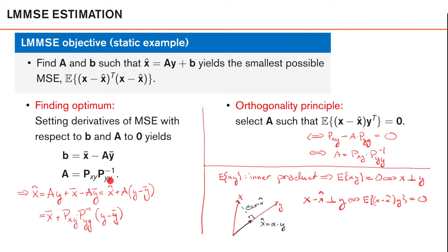We have made no assumptions regarding the properties of X and Y — in terms of their distribution or how they relate to each other. To derive the LMMSE estimator, the only thing we need to calculate is the mean of X and Y, the cross-covariance between X and Y, and the covariance of Y. This could be challenging in itself, but we will later show an efficient way to approximate these in more general settings, for example when we have non-linear motion and measurement models.